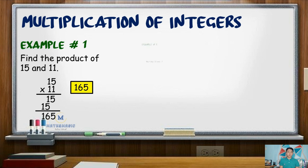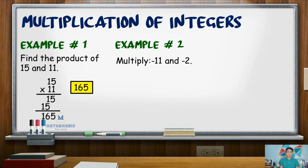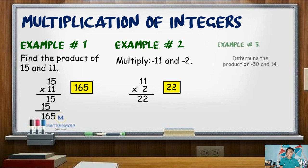Example number 2, where both numbers are negative: negative 11 and negative 2. The product of 11 and 2 is 22. Since they are like signed, the product should be positive, giving us positive 22.